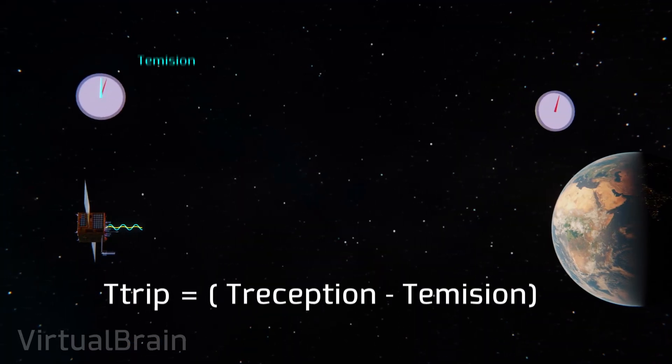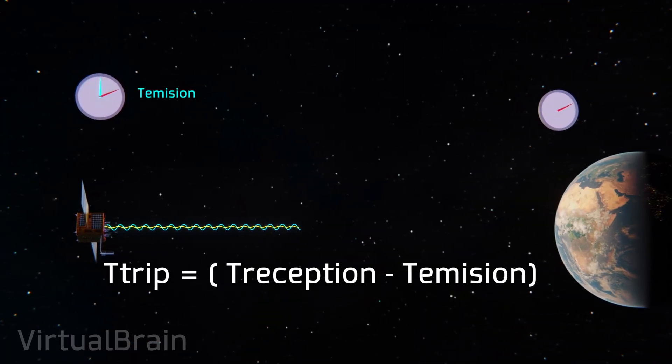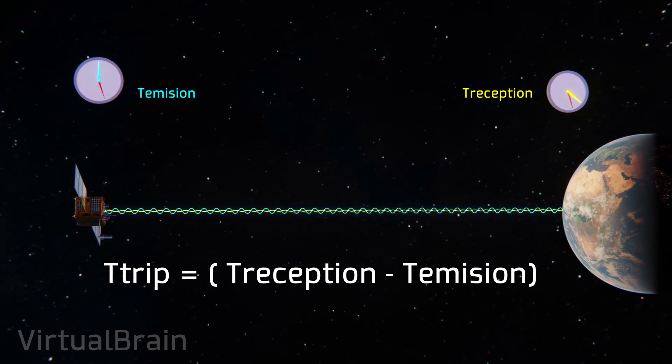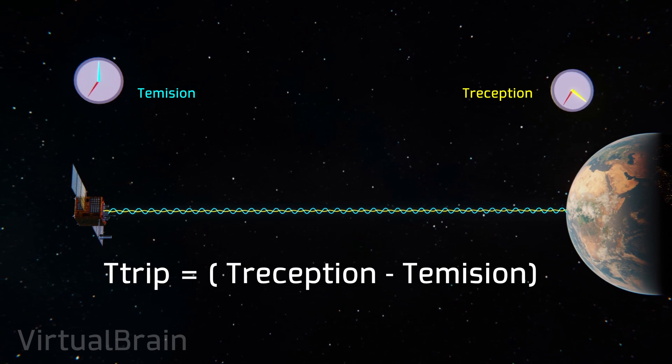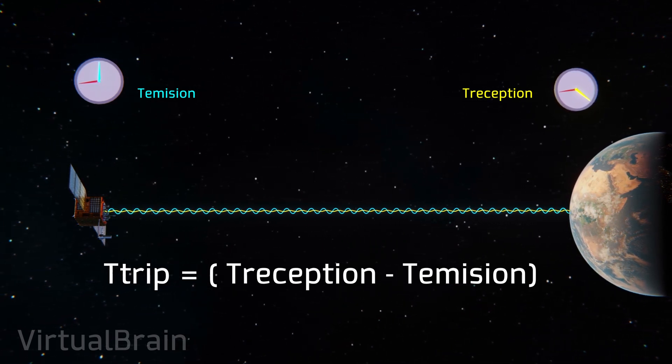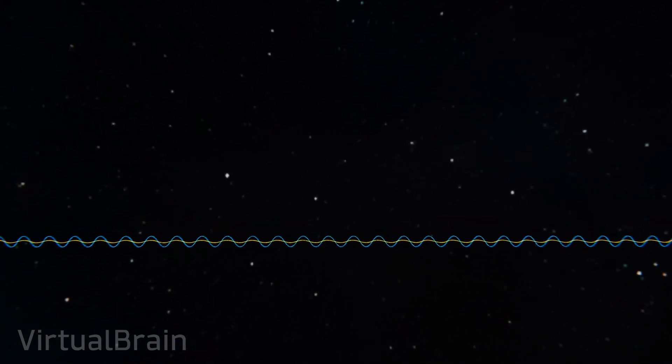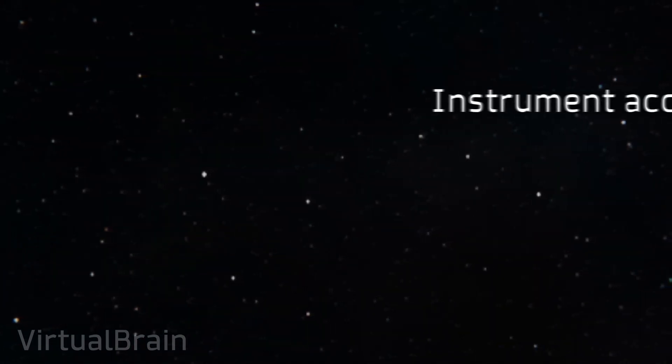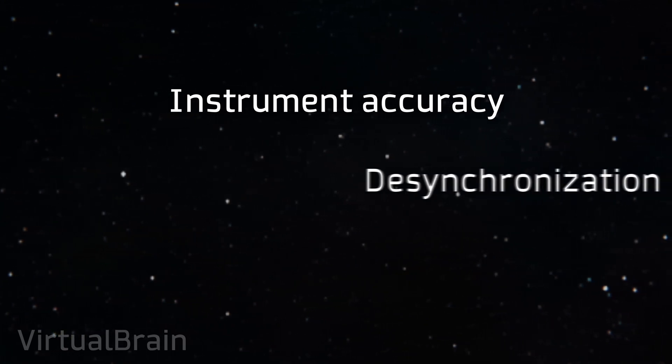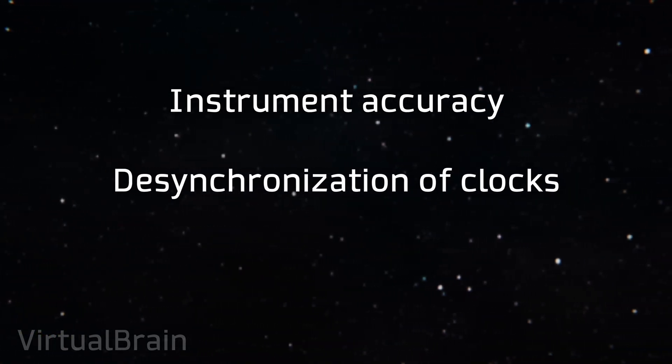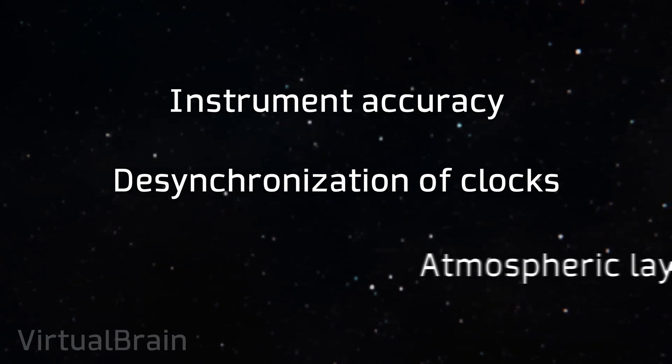Although to calculate the travel time of the signal we only need to know the exact time in which the signal is emitted by the satellite and when it reaches the receiver, this is not at all easy, because we must consider multiple variables that can affect the results of this calculation. Some of the most important are the level of accuracy of the instruments, the desynchronization of the clocks due to time dilation as explained by Albert Einstein's theory of relativity and the effect of atmospheric layers.